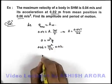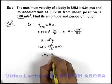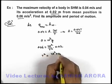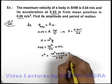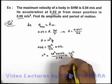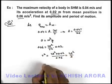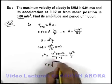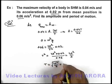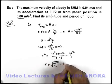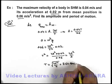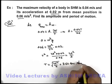On simplifying this, we will get T² is equal to 4π² into 0.02 by 0.06, which is equal to 4π² by 3. So time period of oscillation can be written as root of 4π² by 3, which on simplifying we'll get 3.62 seconds, which is the answer to this problem.